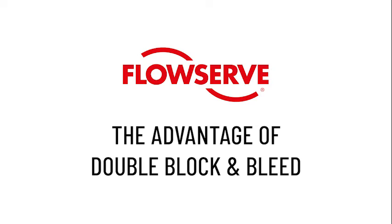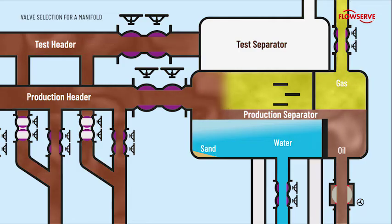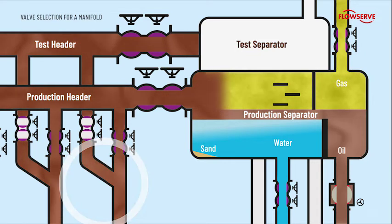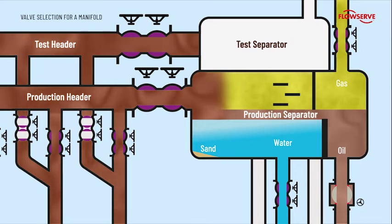The advantage of double block and bleed. If properly designed, manifolds can also be used for isolating specific flow lines from pressure in the headers, allowing for flow line maintenance or the connection to new wells to be completed without the need for a plant to shut down.